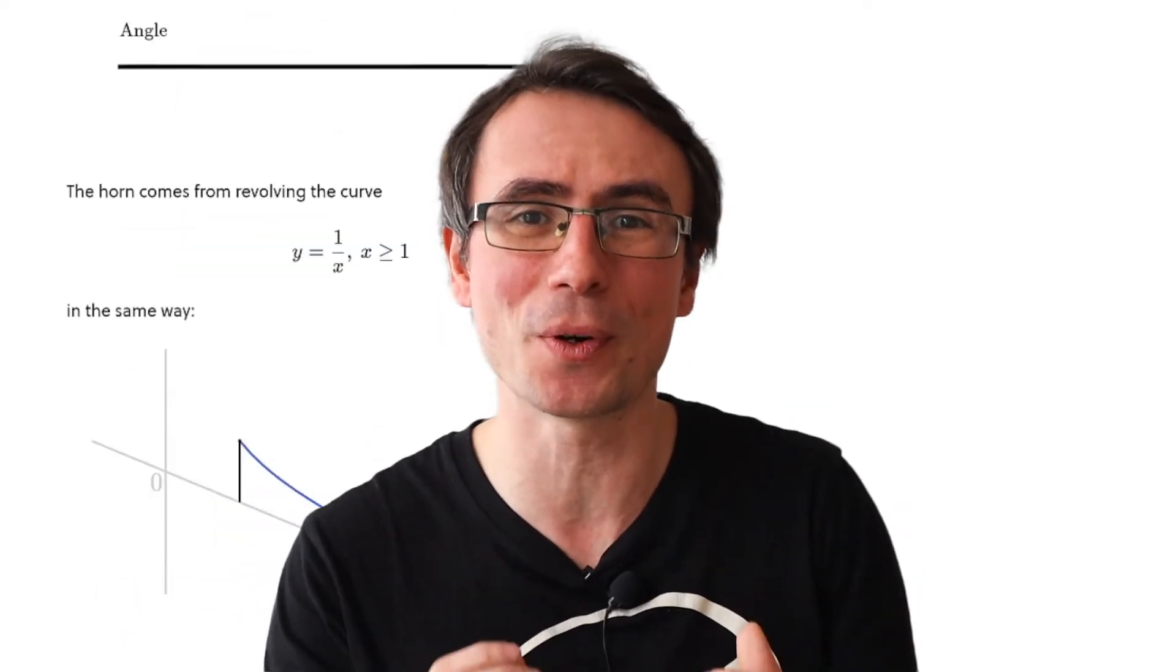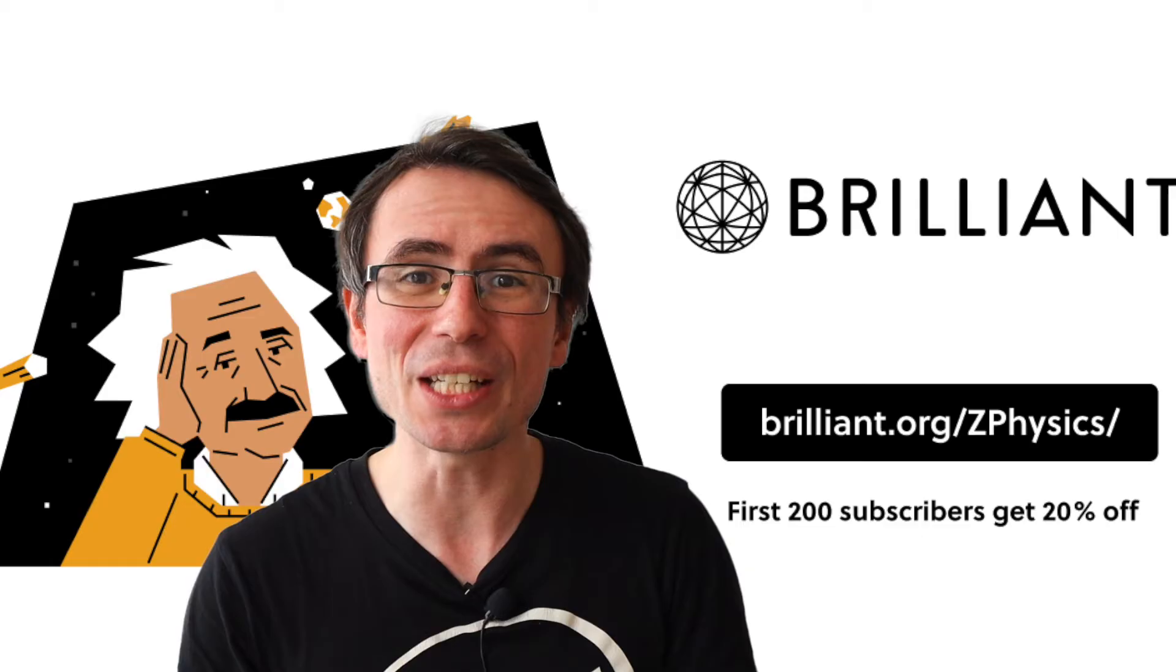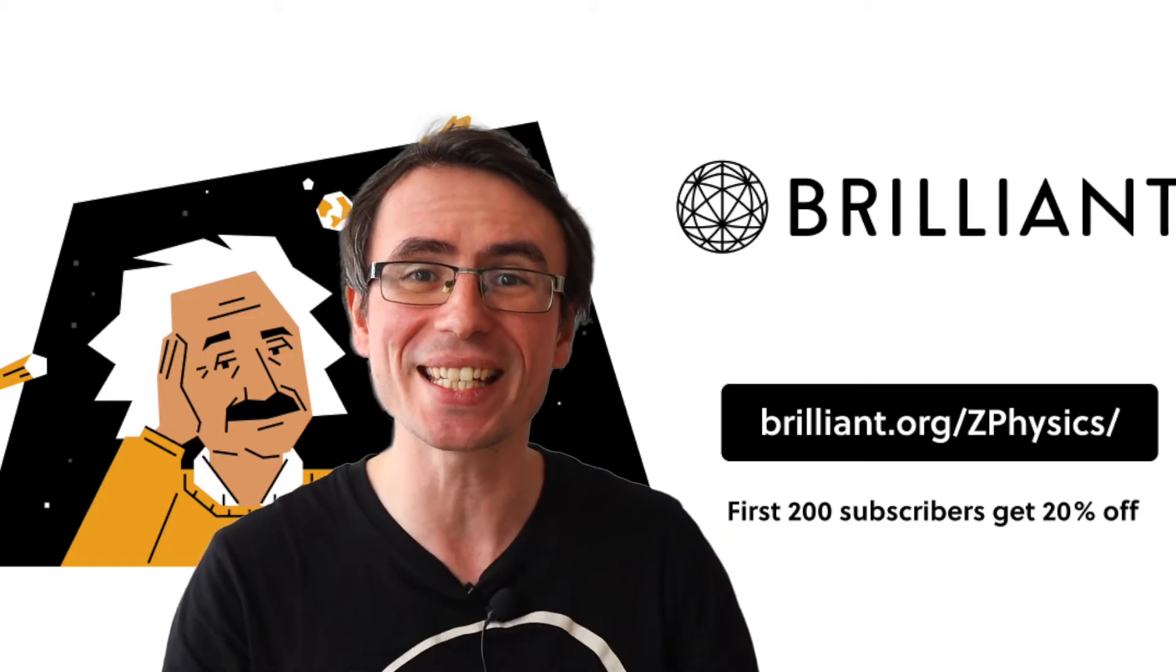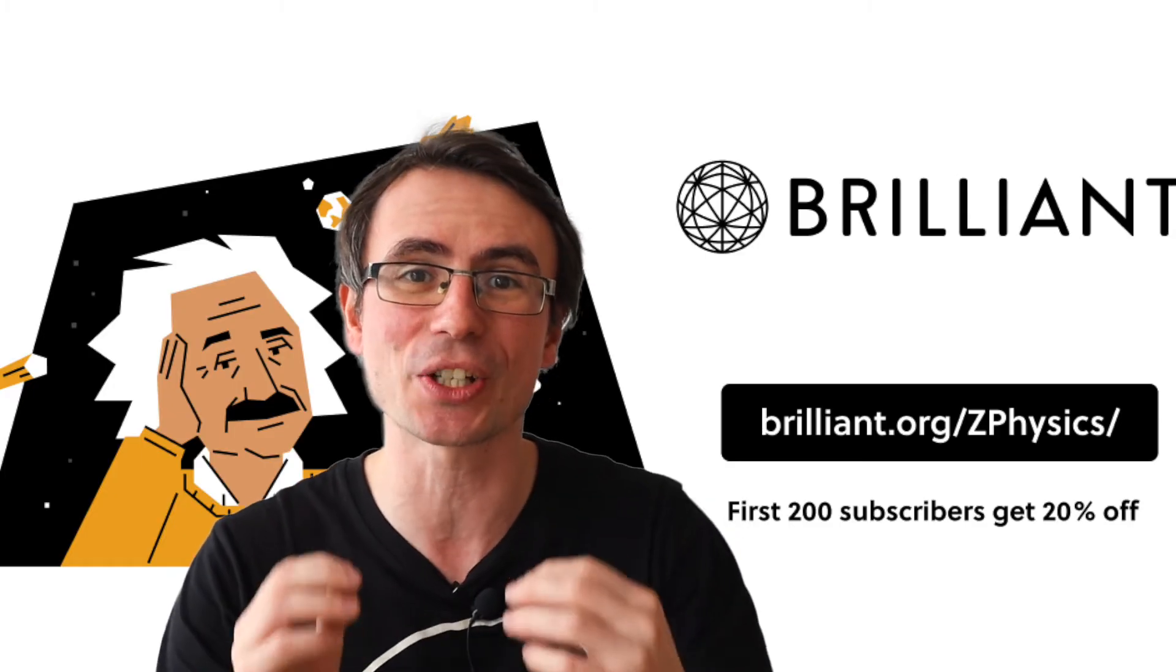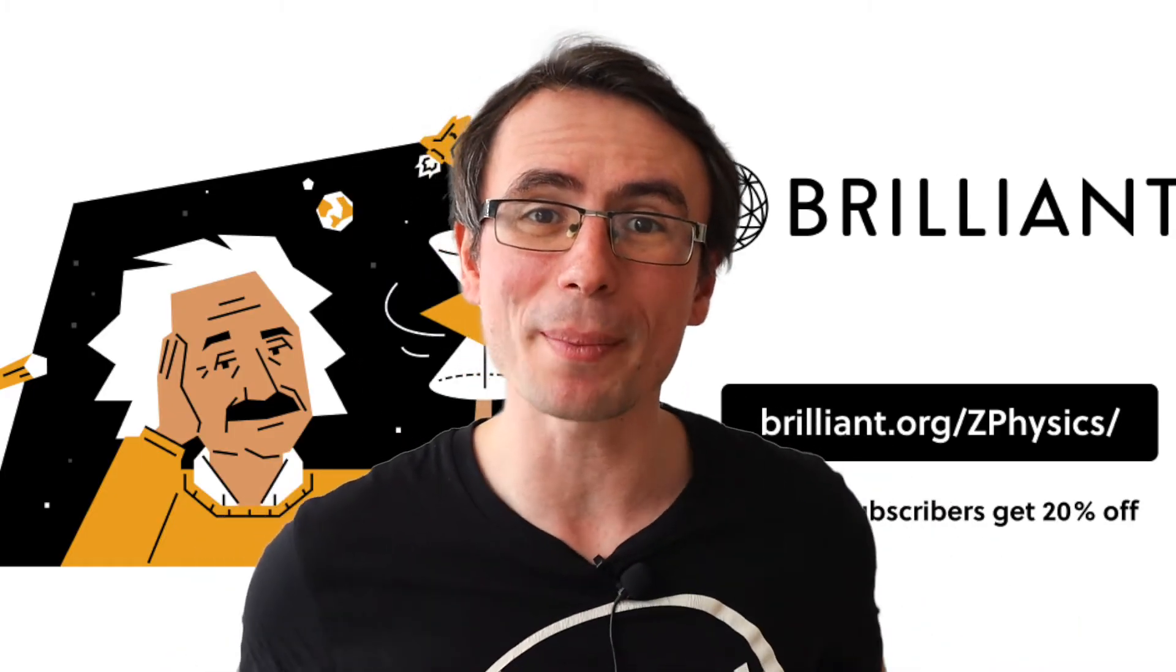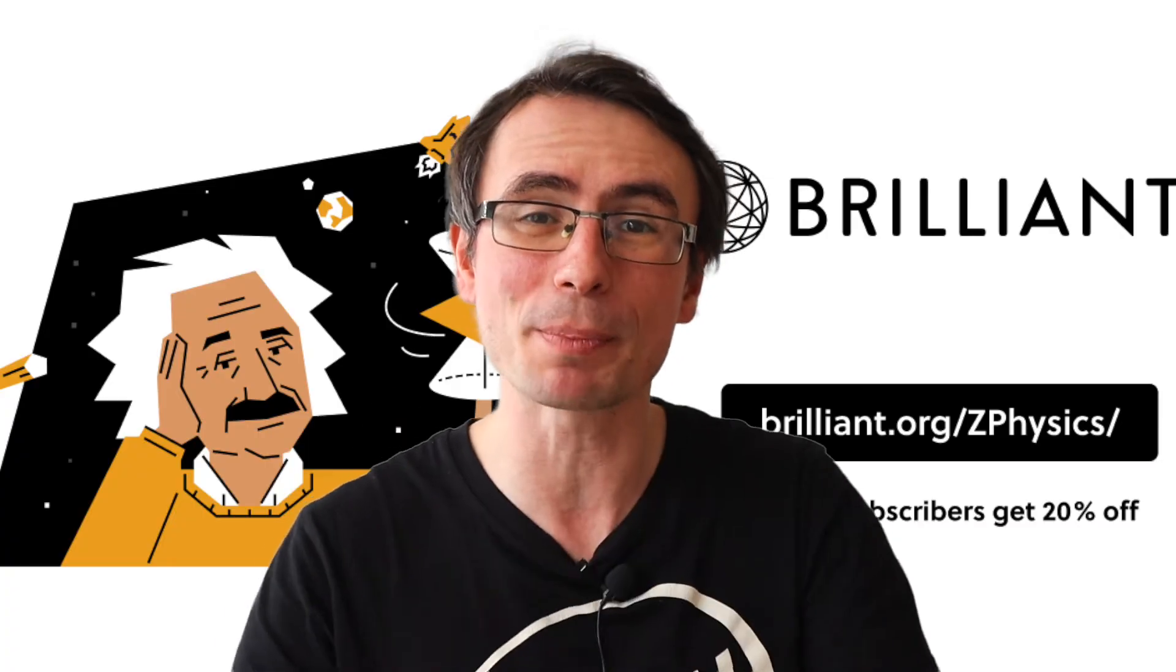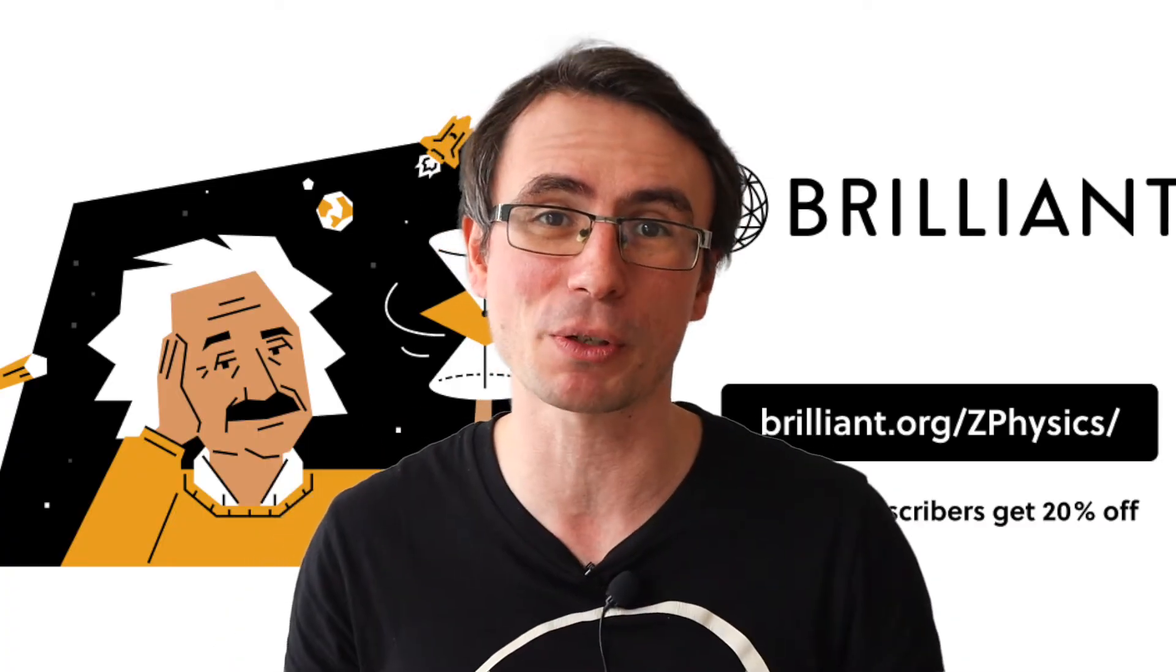Brilliant is available for all level mathematics and there's always a helpful hint at hand. You absolutely need to check it out for free for 30 days using the link brilliant.org slash zphysics. And the first 200 subscribers that sign up will get 20% off their annual subscription.